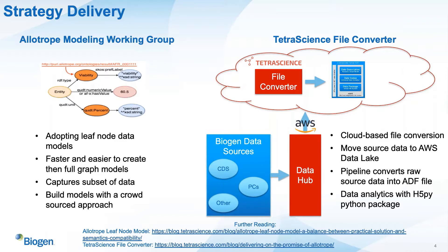The second part of the delivery is through the TetraScience data integration platform and the TetraScience file converter. As instrument data is generated, it's fed into a data hub. That data hub uploads the information into an AWS cloud storage environment — a data lake. Inside the data lake, there are two conversion pipelines: raw instrument data is converted into an IDS JSON (the IDS intermediate data schema), and the IDS JSON is then converted into an ADF file. Once the ADF file is generated, we can perform data analytics using the H5Py Python package, connecting to the underlying HDF5 framework inside an ADF file.